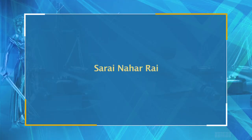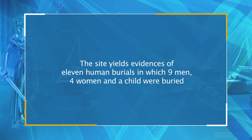The second important site is Sarai Nahar Rai, a Mesolithic site located on a dried oxbow lake in Uttar Pradesh, India. During excavations, various microliths were found along with animal bones including bison, stag, fish, rhinoceros, and tortoise. The site yields evidence of eleven human burials in which nine men, four women, and a child were buried. One skeleton has arrows embedded in its ribs, indicating these people may have been killed. Grave goods include animal bones, microliths, and shells.